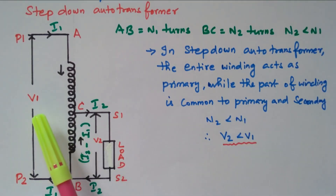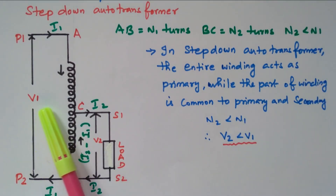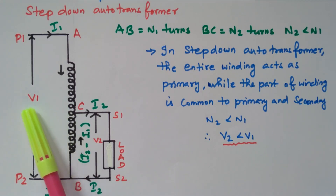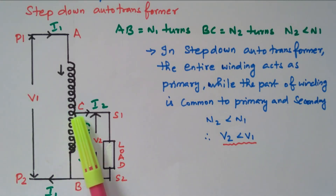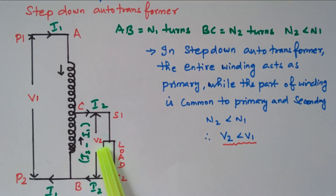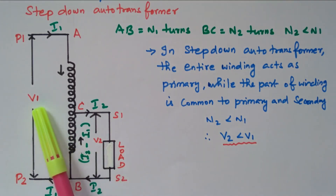V1 is the voltage applied to the entire primary winding. Since the secondary uses only part of the winding, V2 is less than V1.